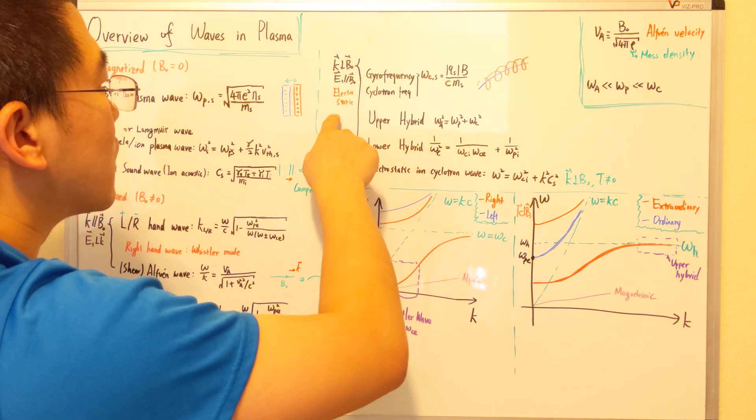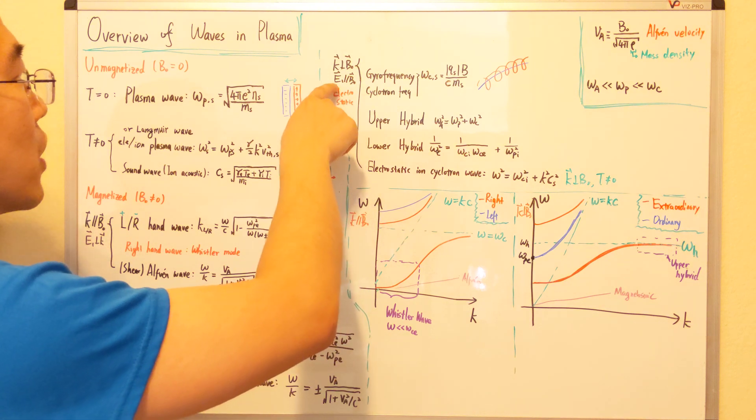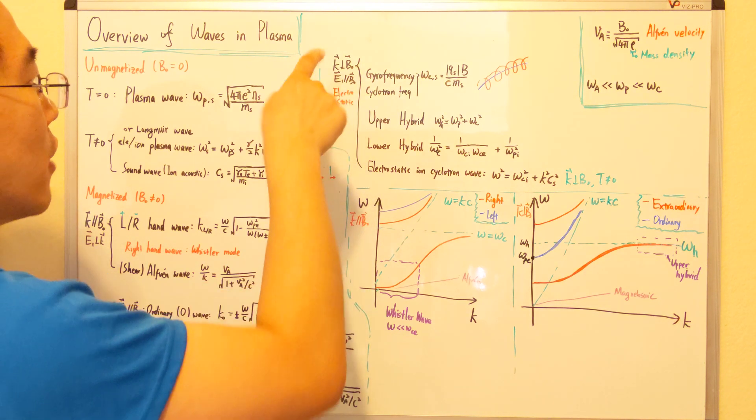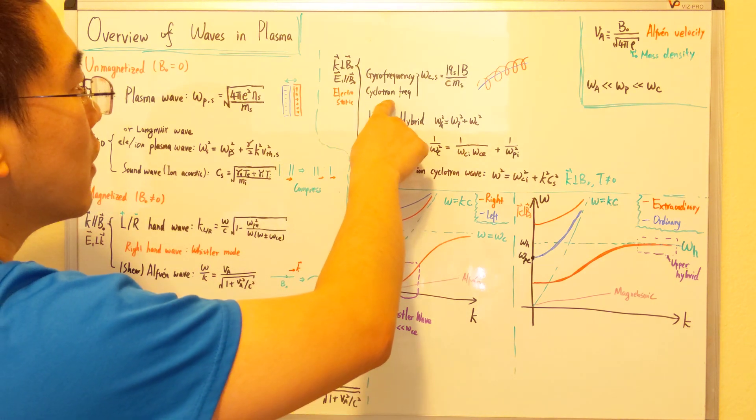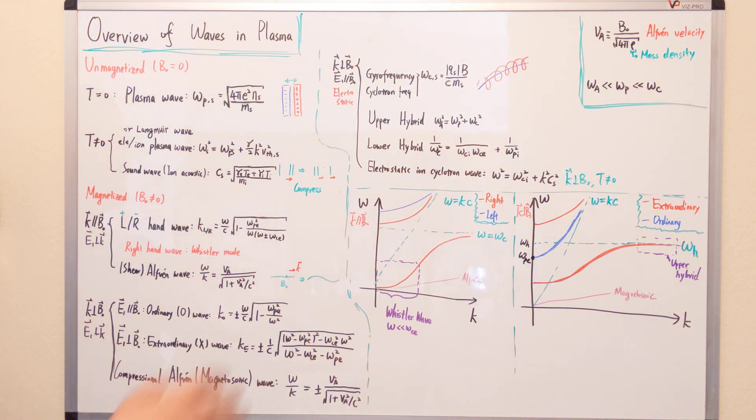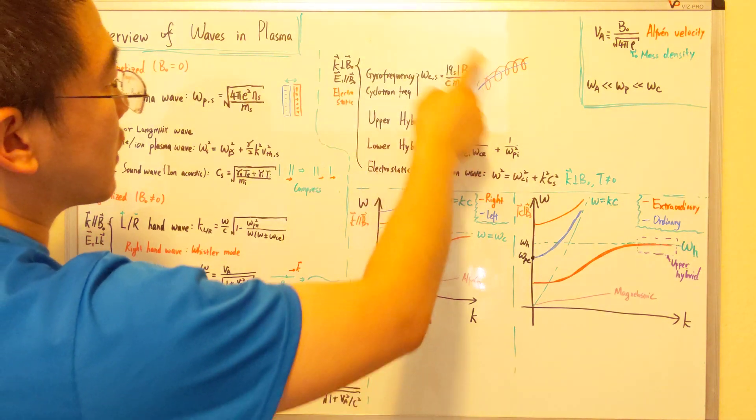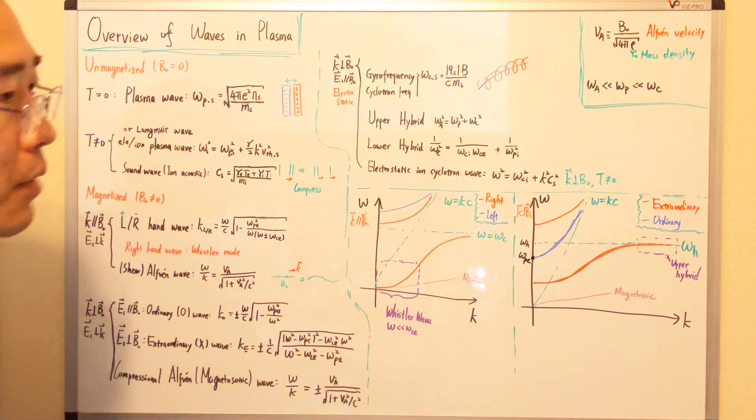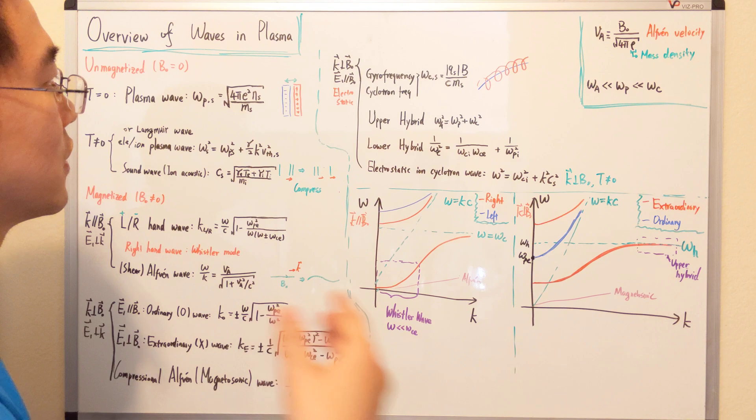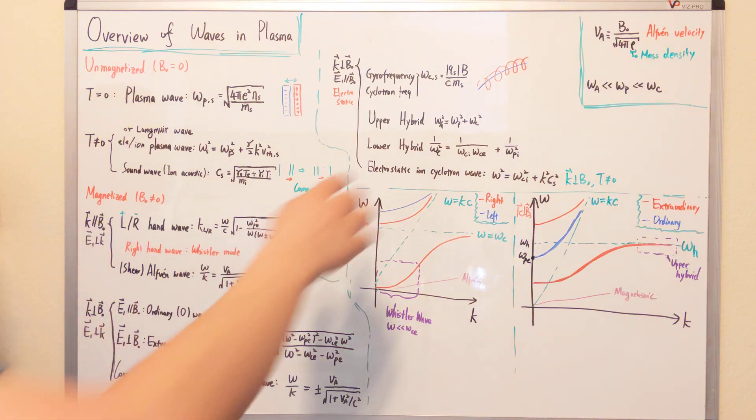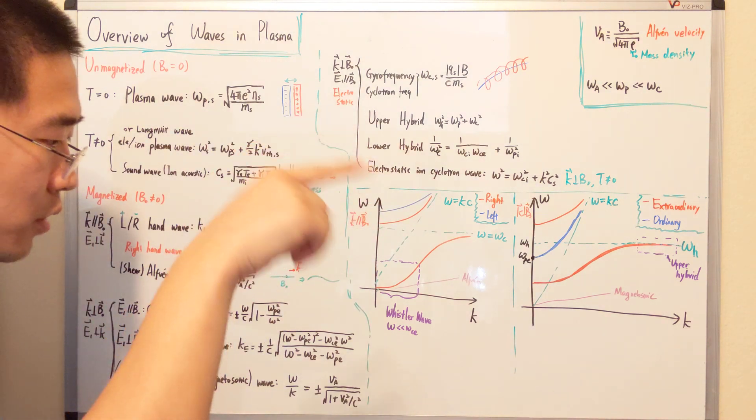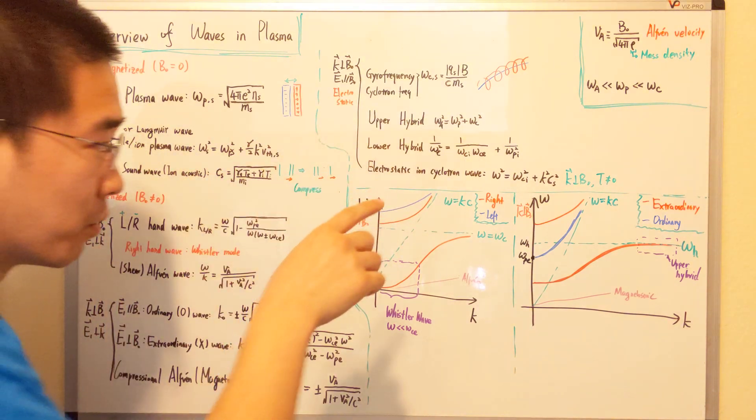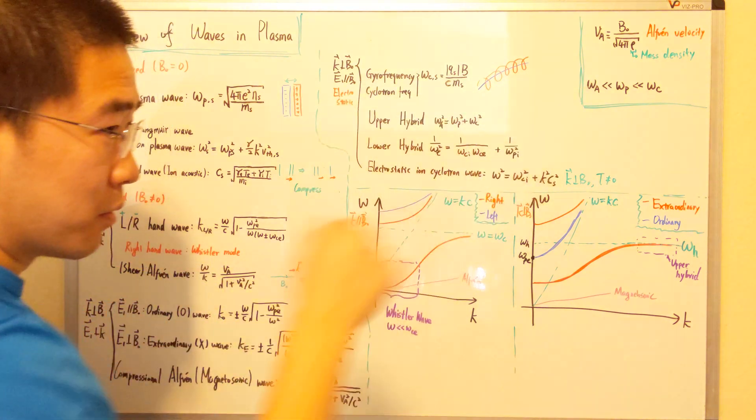And for the electrostatic case, in other words, E1 parallel to b-naught, we have gyrofrequency or cyclotron frequency. It has a lot of nicknames. Like the radius is larmor radius, gyroradius, cyclotron radius, stuff like that. And they're basically just rotating, like the particles is rotating along with the magnetic field line.